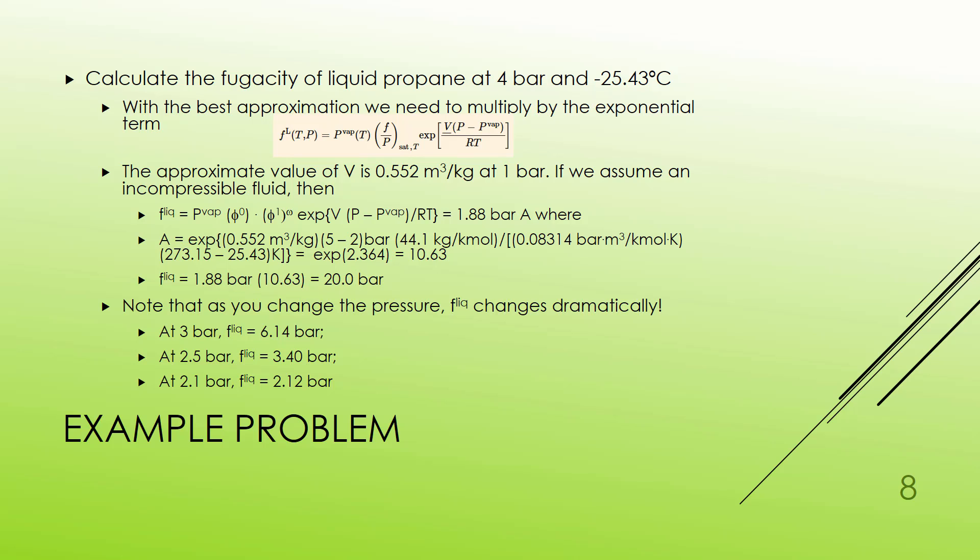Now doing a data search I found that the specific volume of propane at 1 bar is 0.552 cubic meters per kilogram. If I'm assuming that this is an incompressible liquid then this is probably good enough. If I don't like that number I could continue doing a search and see if I had other values. But typically for liquids an incompressible fluid is about as good as we're going to do. So I'll use that for V. This term then becomes that 0.552 meters cubed per kilogram times 5 minus 2 bar. I'm going to be dividing by R the gas constant. So I need to get rid of the per kilogram in the cubic volume or in the specific volume. And so multiply by 44.1 kilograms per kilomole. And then divide by my R, divide by my temperature. And I end up with 10.63. Multiply that times up my 1.88. And at 4 bar the fugacity for the liquid is approximately 20 bar.